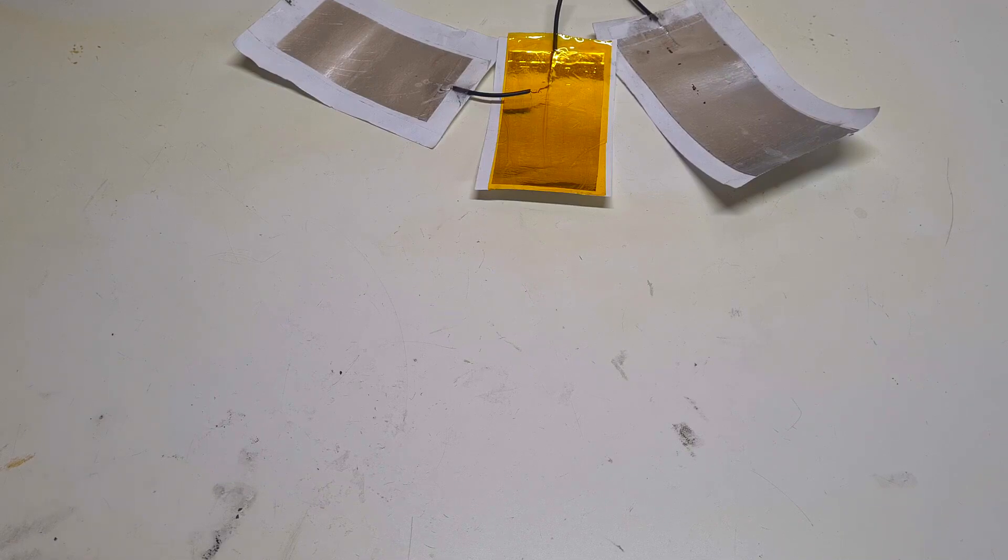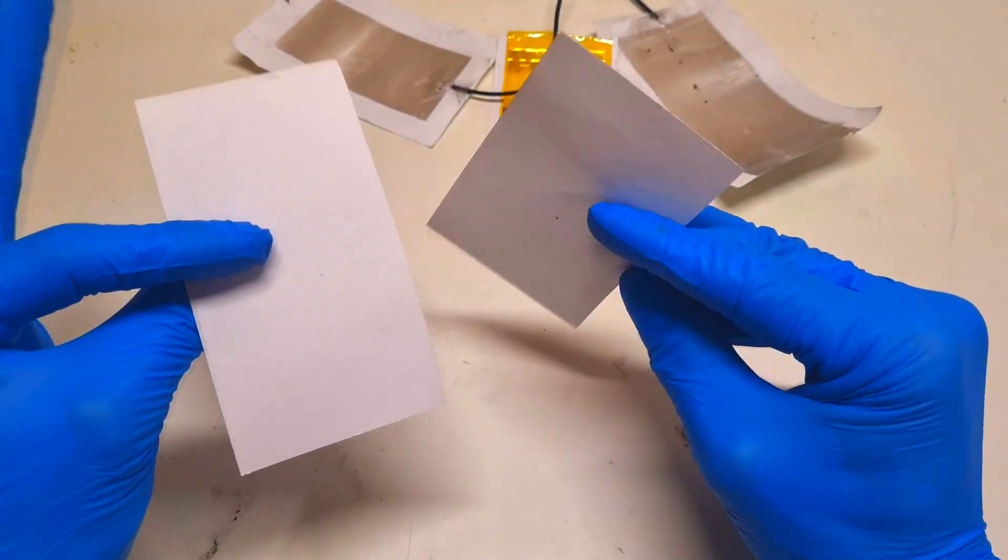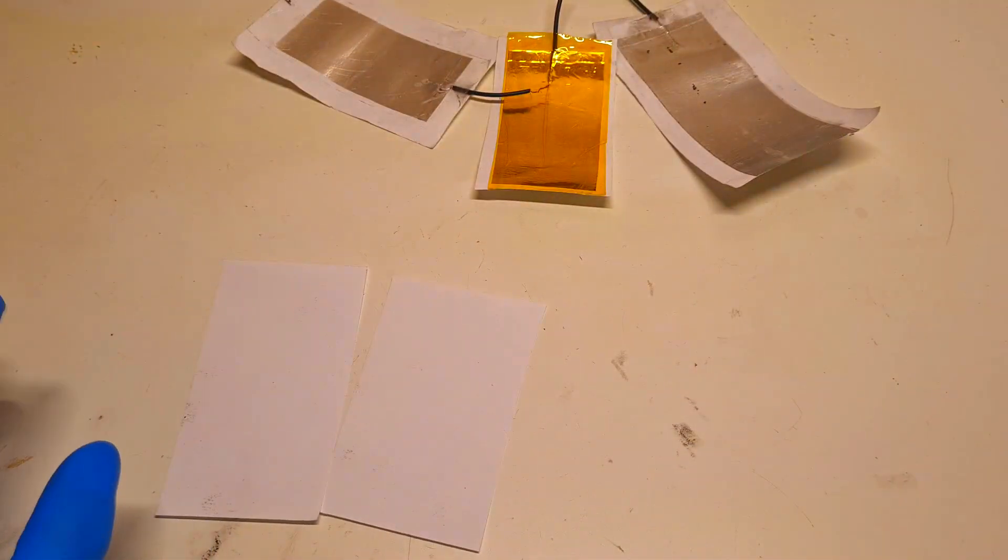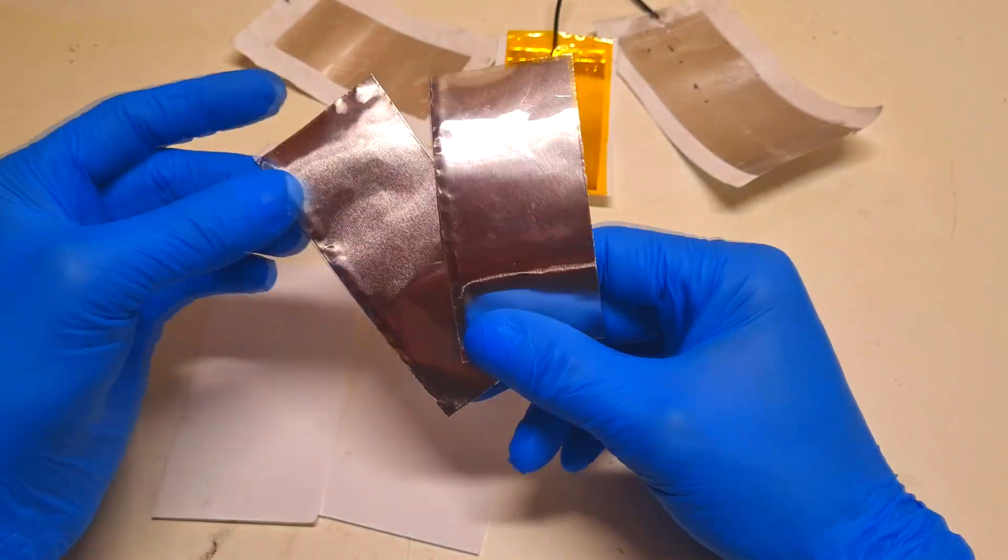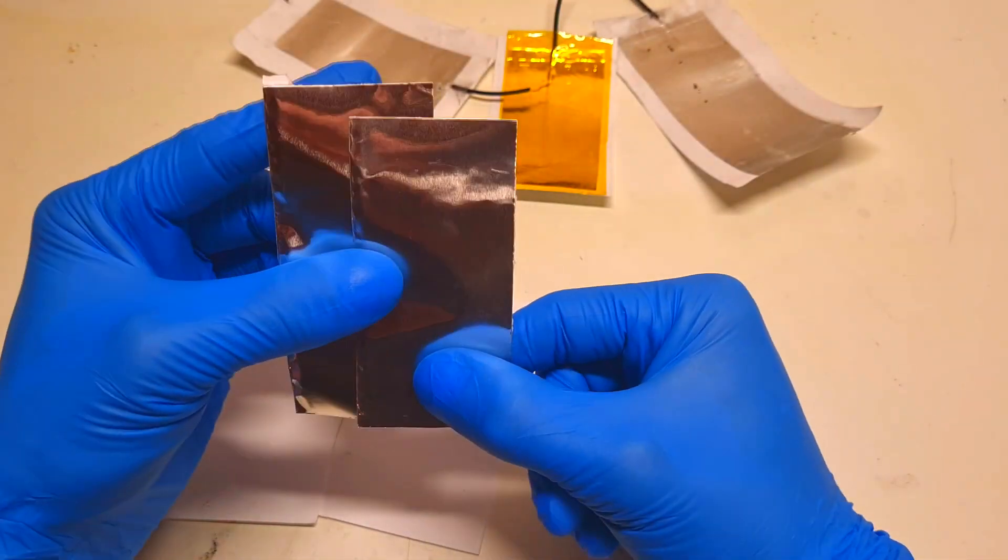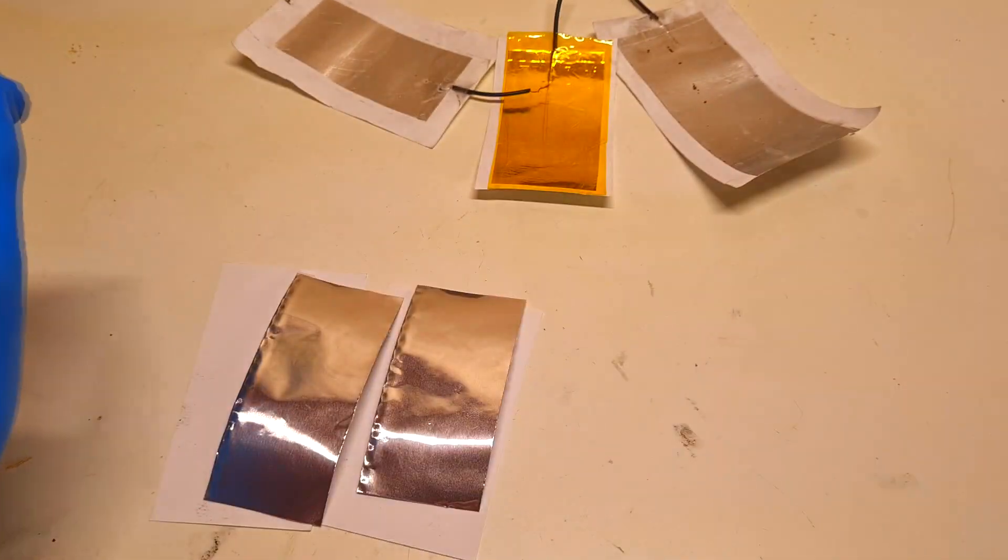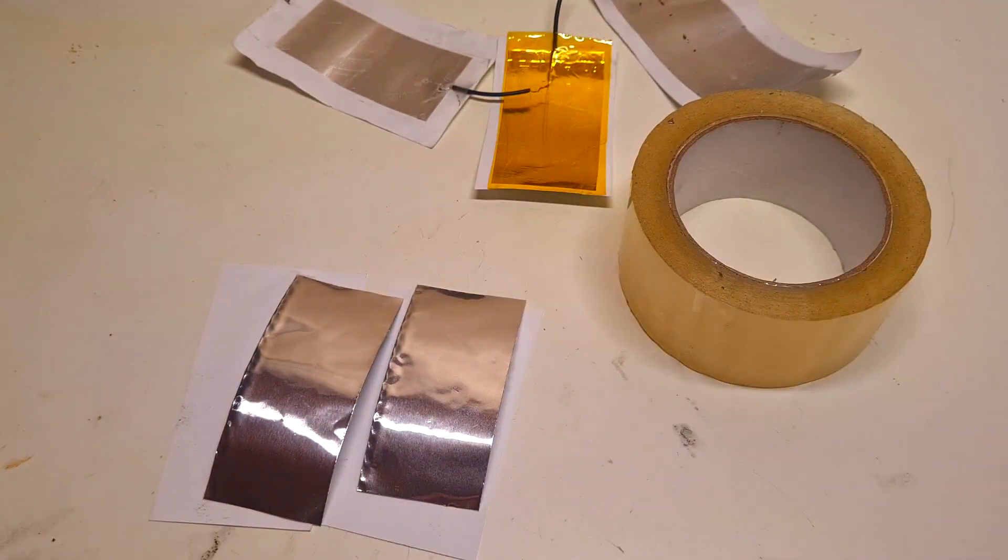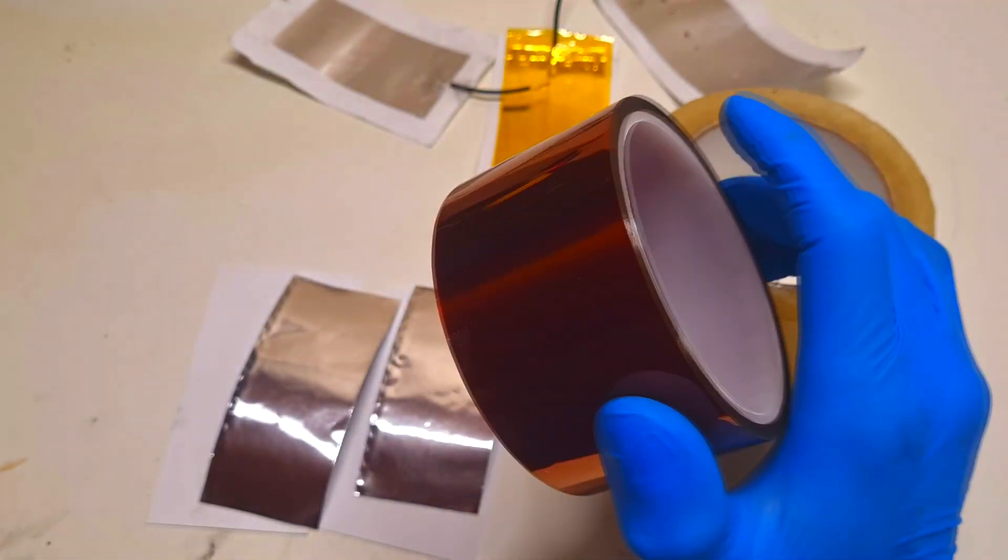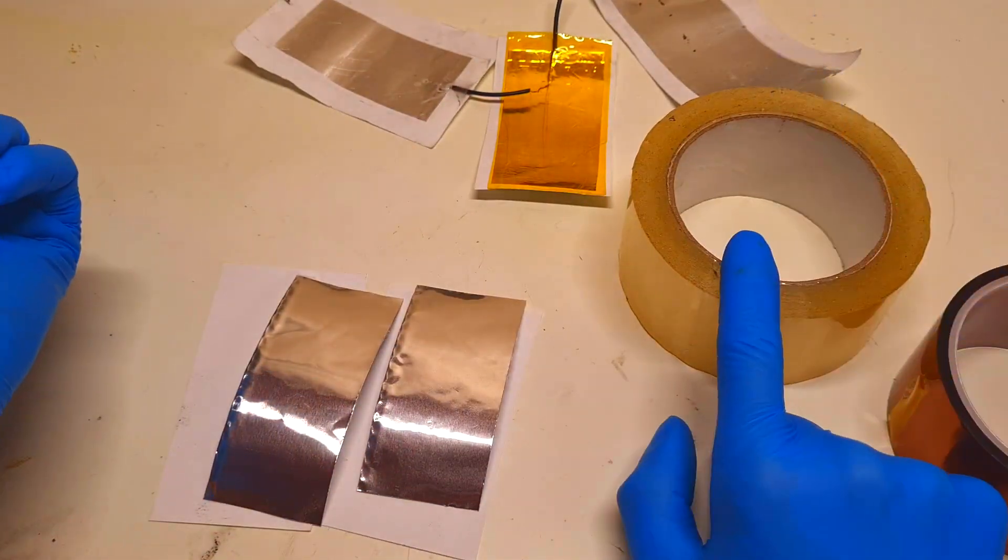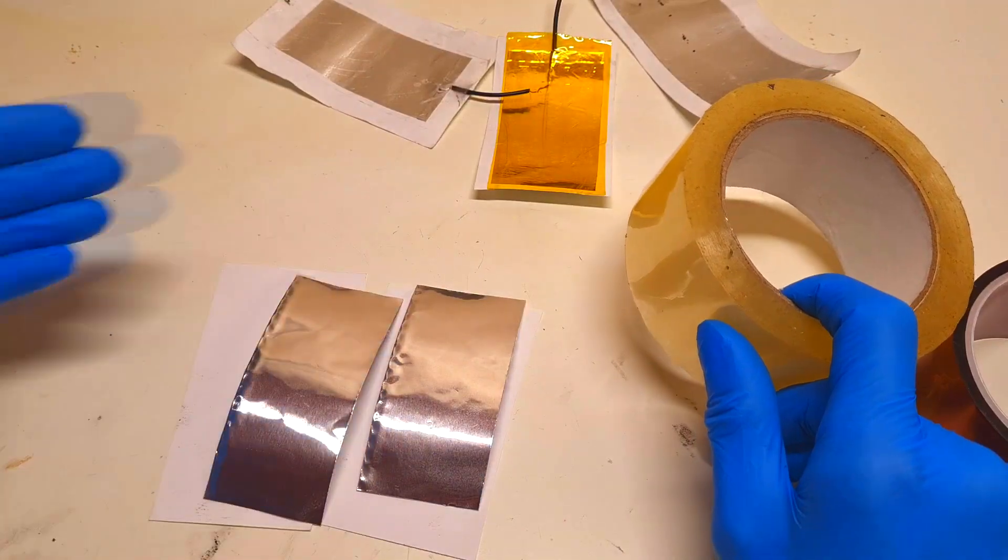To make this triboelectric generator I will use two pieces of paper which I already cut to this size. Then I will need two pieces of aluminum. You see that one aluminum is a little bit longer than another. Then I will use this normal tape and also this Kapton tape. But instead of using Kapton tape you can also use normal tape for both electrodes.